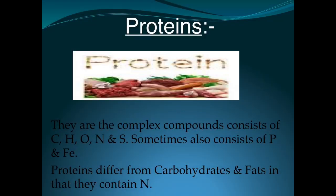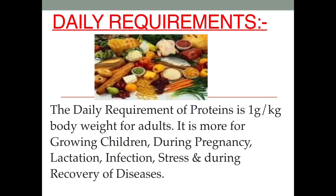Proteins are different from carbohydrates and fats because they contain nitrogen. They are complex compounds consisting of carbon, hydrogen, oxygen, nitrogen, and sulfur, and sometimes also contain phosphorus and iron.